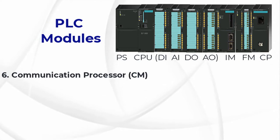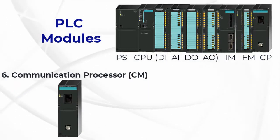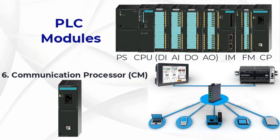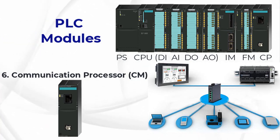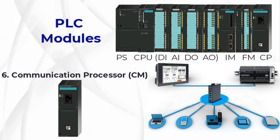6. Communication Processor (CM): The communication processor is an optional module. It can be used for providing an additional communication port for communication protocols. It is used for networking communication between multiple processors or PLCs. Also, the CP exchanges data between PLC, SCADA, HMI, and other systems.